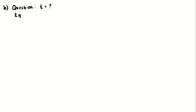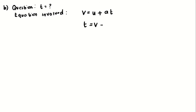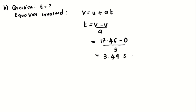For question b, it asks to find the time elapsed for the car to travel 30.5 meters. The equation we use is v = u + at, rearranged to t = (v − u) / a. Substituting all the information gives t = 3.49 seconds.